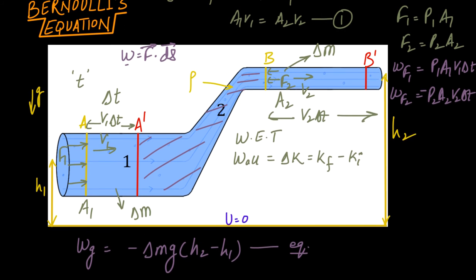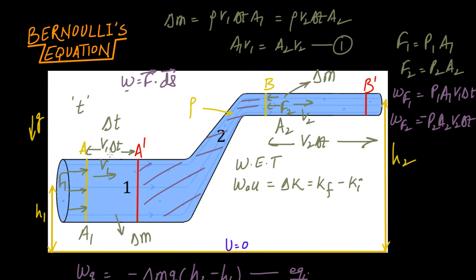Are there other forces? There are forces from the walls of the pipe, but since we assume no friction and zero viscosity, these normal forces are perpendicular to the displacement. F dot ds equals F ds cos 90, which is zero. So normal reaction from the walls does no work. The only forces are F1, F2, and gravity.